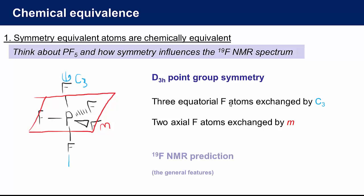So what would we predict for the 19F fluorine NMR spectrum? Well we should get two signals. One for the two axial atoms and one somewhere else for the three equatorial atoms. And these signals should have integrated intensities of two to three respectively. Predicting the number of signals and the relative intensities gives us the gross features of the NMR spectrum.